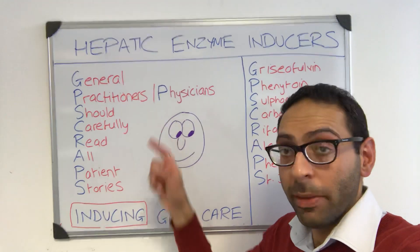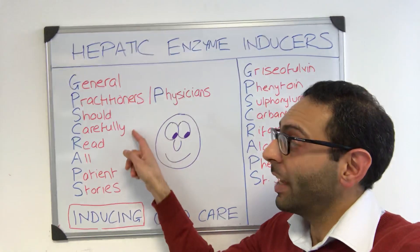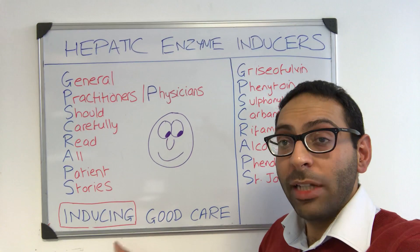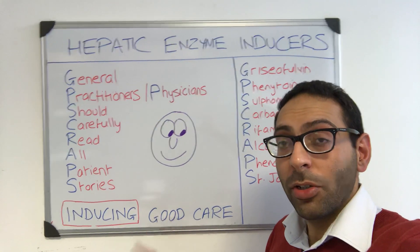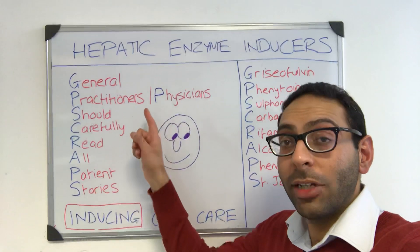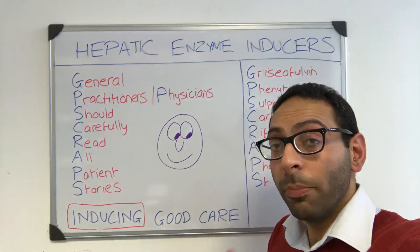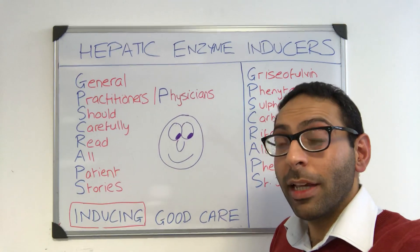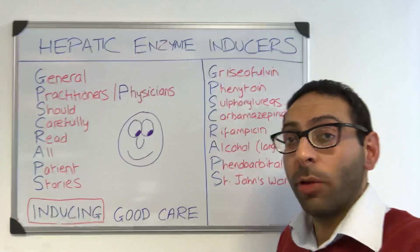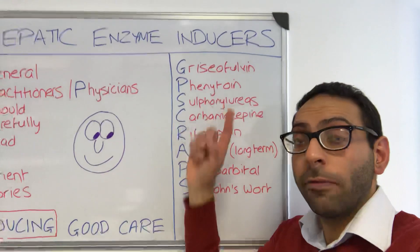General practitioners or physicians, depending on what type of doctor you are, should carefully read all patient stories, thereby inducing good patient care. What do these stand for? G is griseofulvin, P is phenytoin.